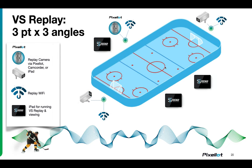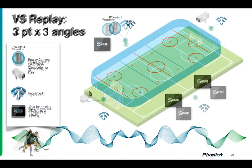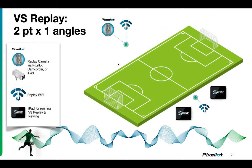In a hockey scenario, maybe you're using a Pixelot camera as your center ice shot, and then you've got additional angles behind the glass, behind the goalie, giving you a great zone shot. For soccer, maybe just using the Pixelot camera, pulling in that panoramic shot or the main coaching view shot. We can also add additional cameras for goal line shots as well.